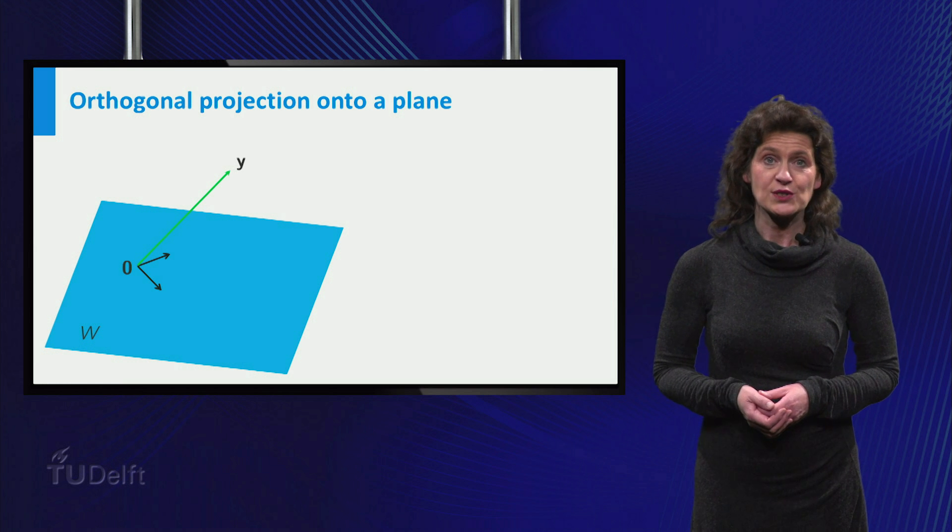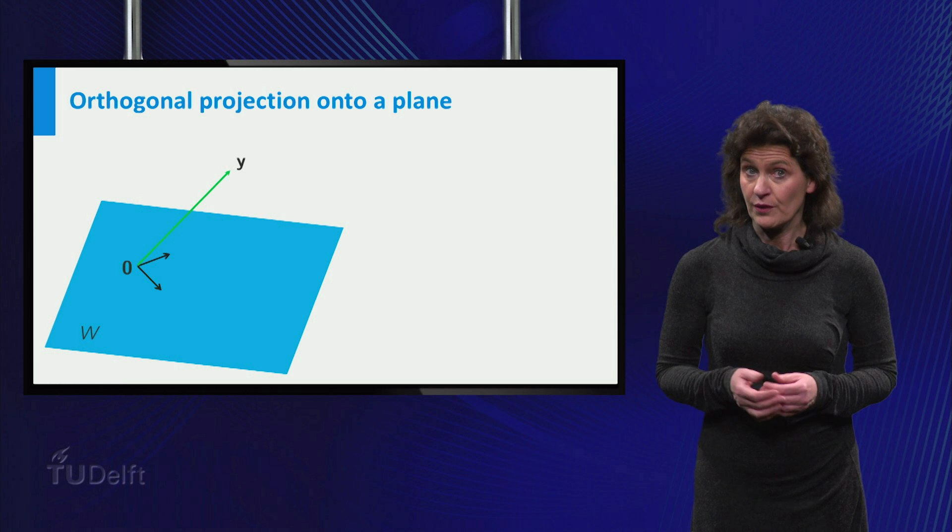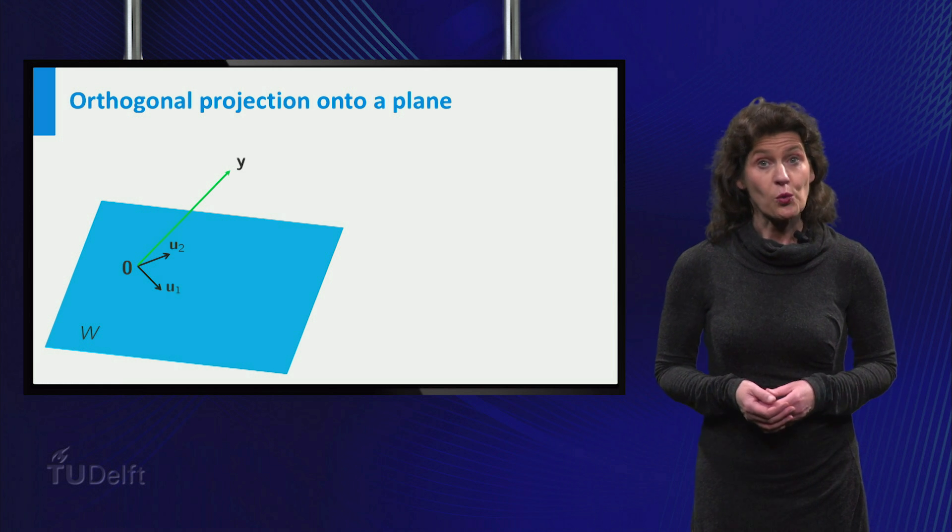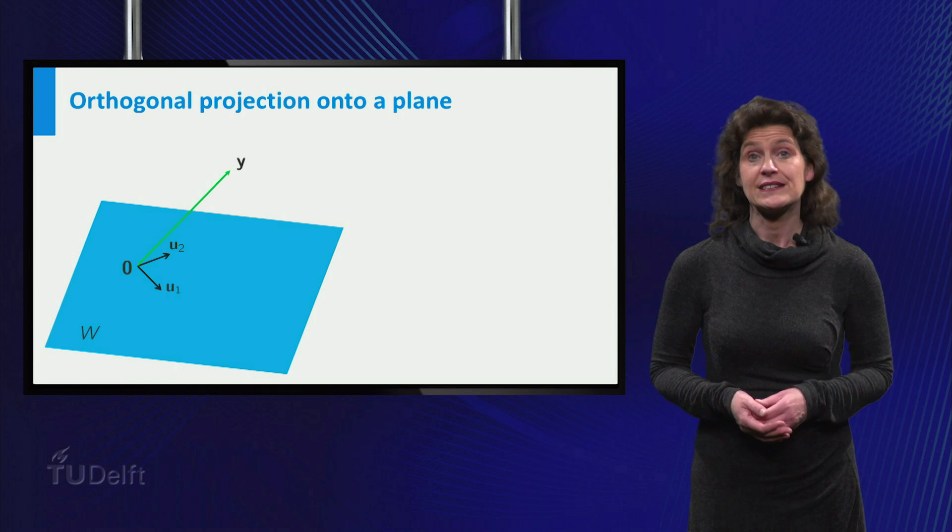Let's choose two vectors for the basis for W that are orthogonal. Let's call them u1 and u2. You will find out why you have to choose an orthogonal basis in a short while.